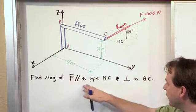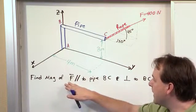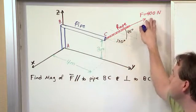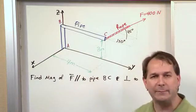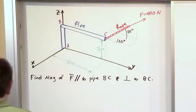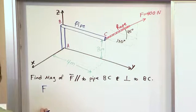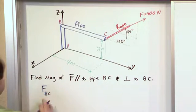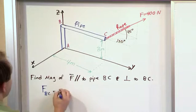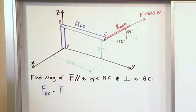So first focus on trying to find how much of this force, the magnitude of it, how much of the 400 Newtons lies along the pipe BC. Much as we've done before, basically what you're seeking to say is that the force along the direction BC, or along the pipe BC, is going to be equal to...